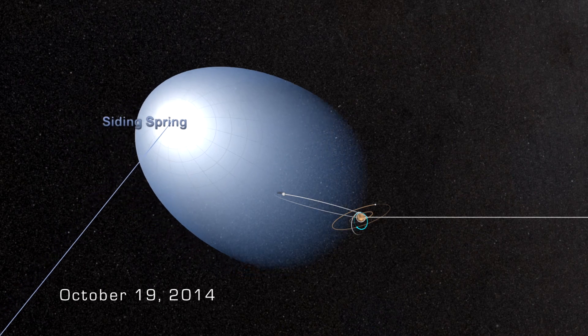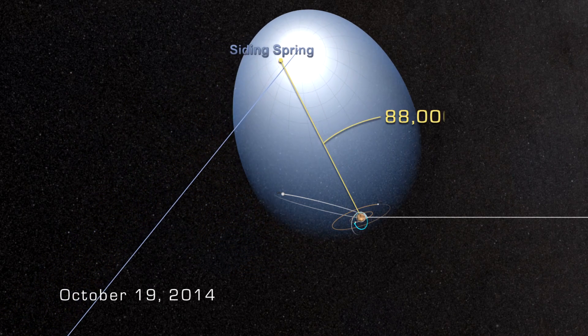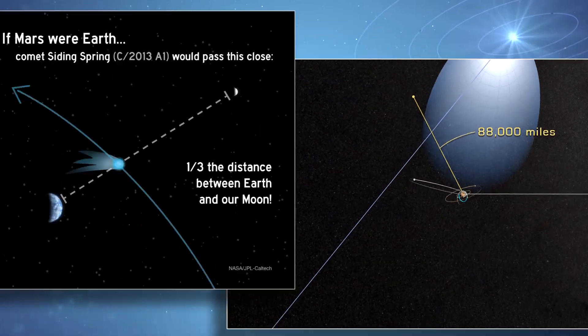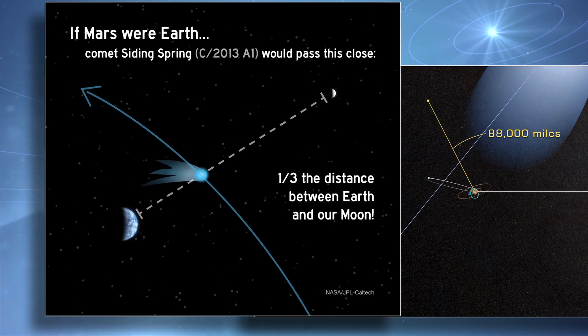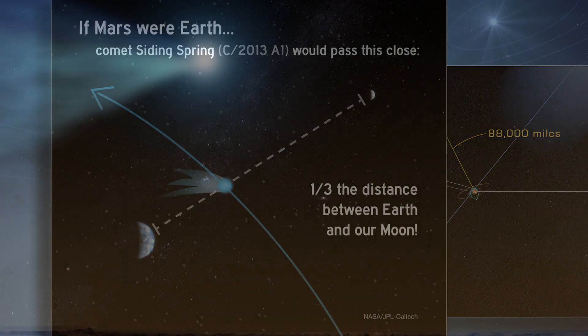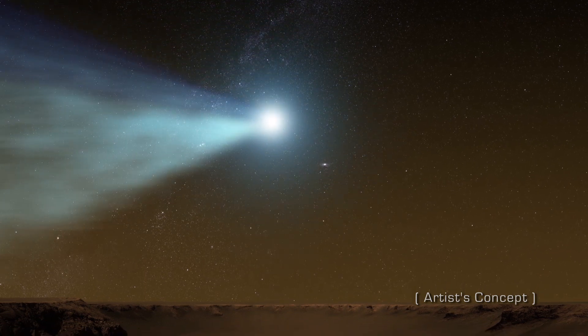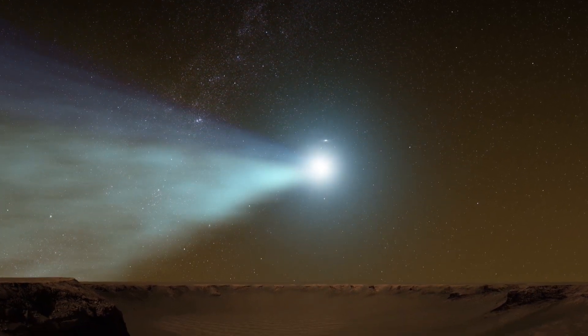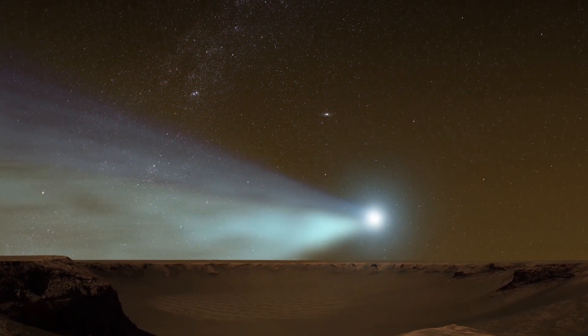On October 19th, Comet Siding Spring will come within 88,000 miles of the Red Planet, roughly one-third of the distance from the Earth to the Moon. Anyone standing on Mars might be treated to a spectacular view, with the comet's long tail of gas and dust dominating the northern skies.